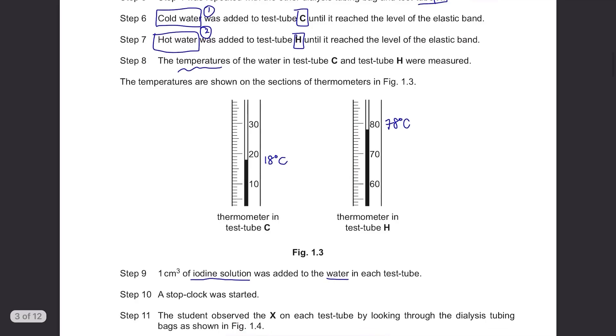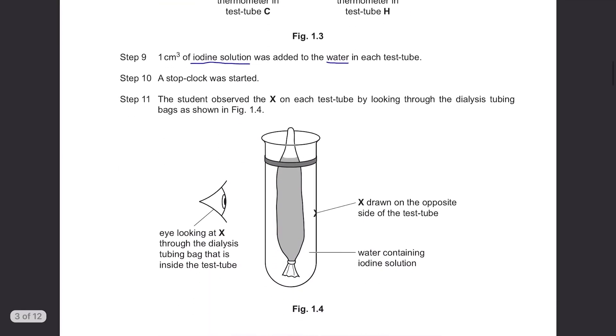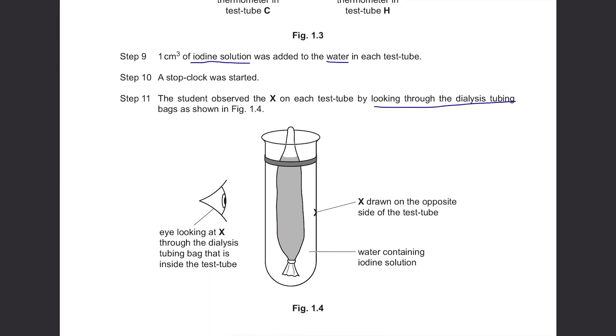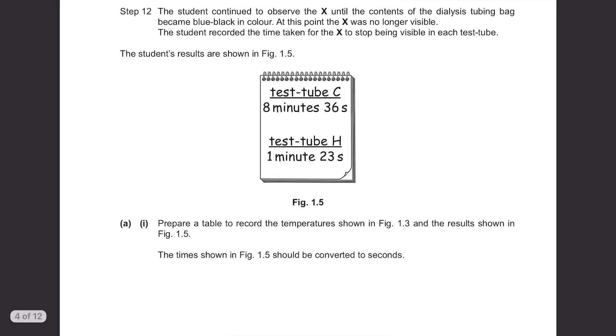Step 11: The student observed the X on each test tube by looking through the dialysis tubing bags as shown in Figure 1.4. So the student looked at C from this direction where X is on the opposite side of the test tube. Step 12: The student continued to observe the X until the contents of the dialysis tubing bag became blue-black in colour. At this point, the X was no longer visible.